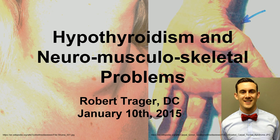I'd like to go over my approach to hypothyroidism and Hashimoto's thyroiditis, and the neurological and musculoskeletal problems that go along with these conditions. Hypothyroidism is often thought of as a disease that affects the body's metabolism. However, there can be very many more problems that go along with autoimmune thyroid disease like Hashimoto's thyroiditis and hypothyroidism, such as neuropathy and arthritis, and that's what I'm talking about today.